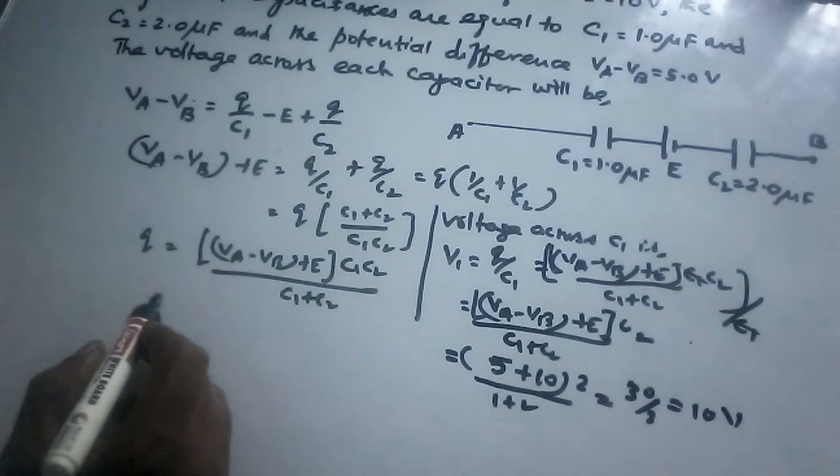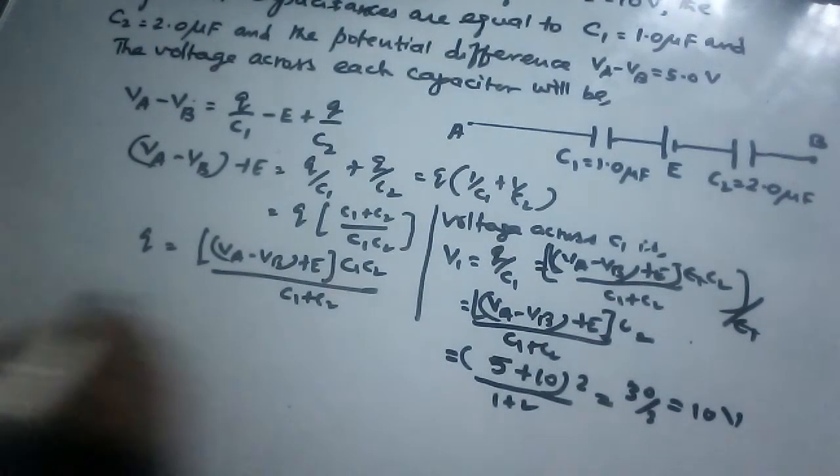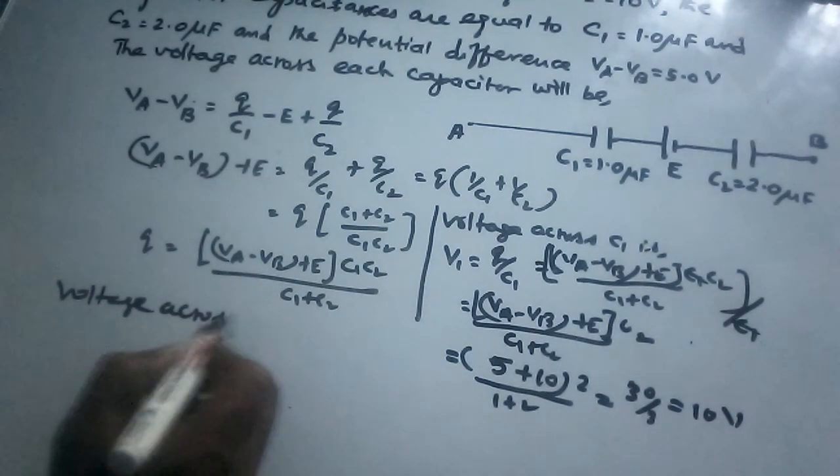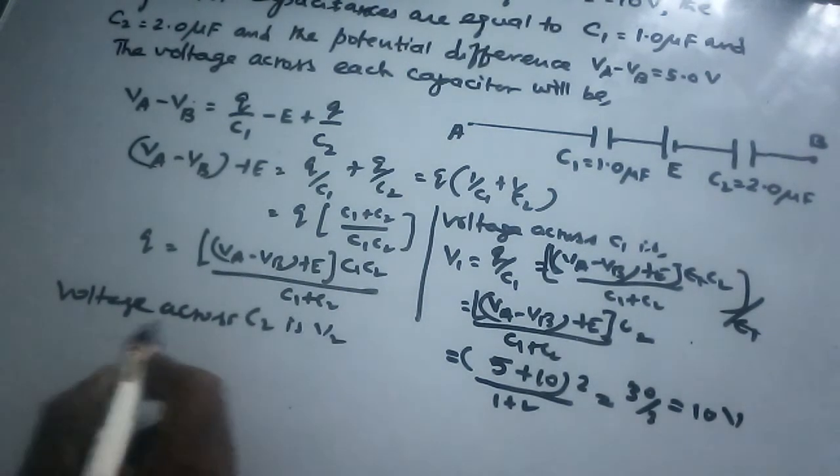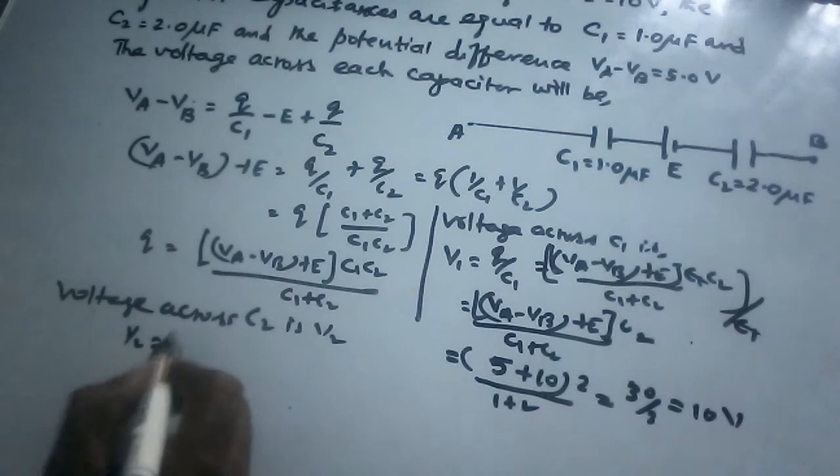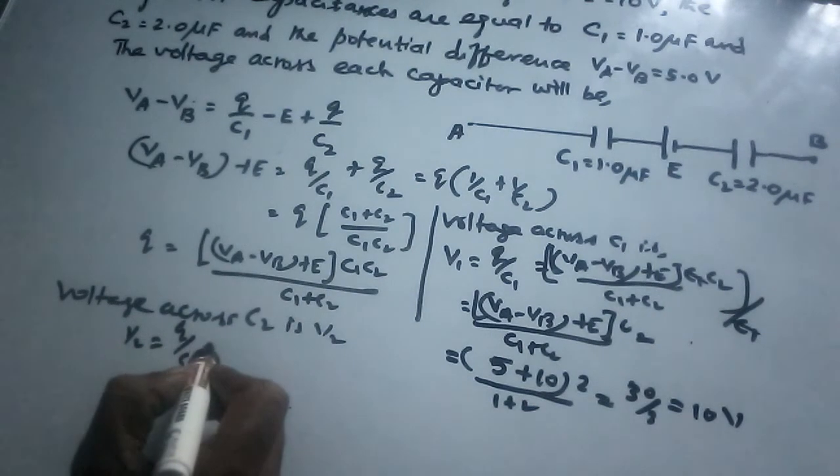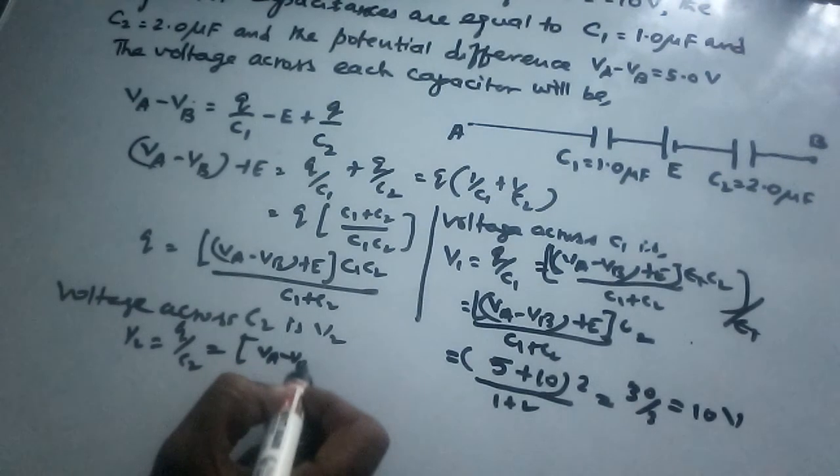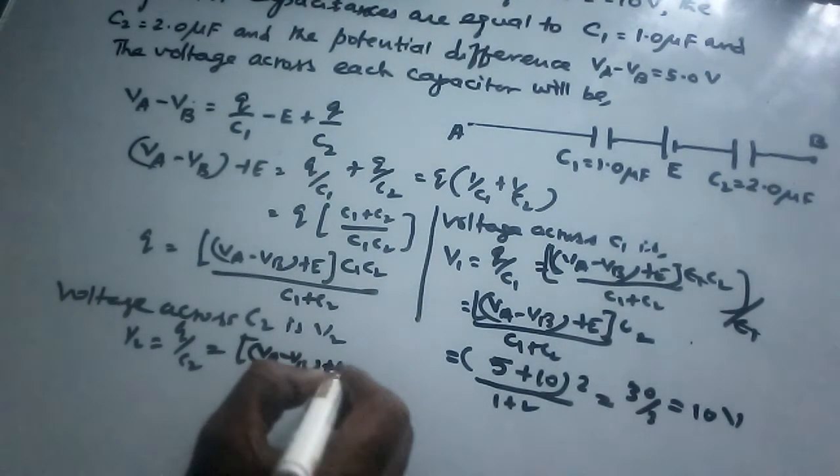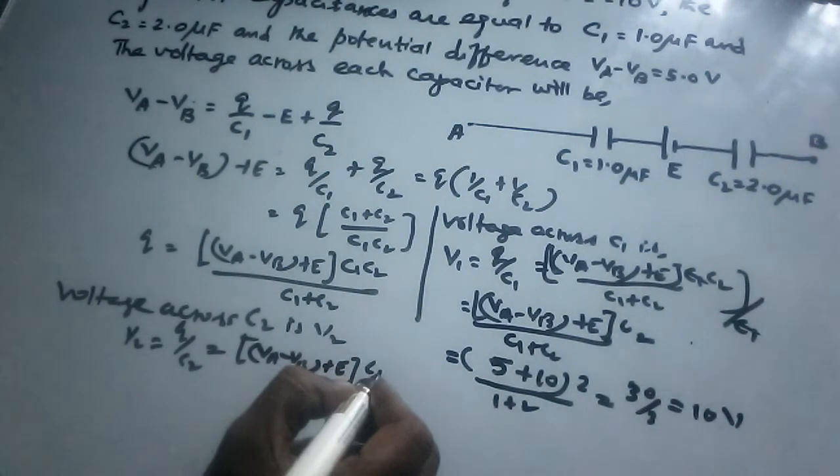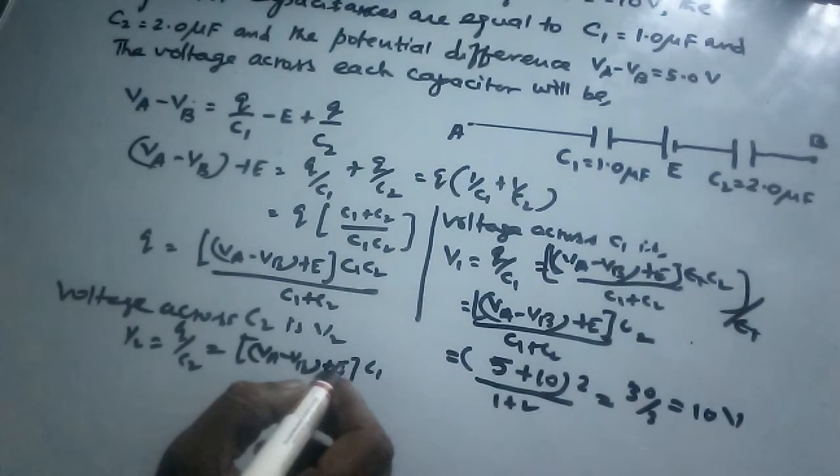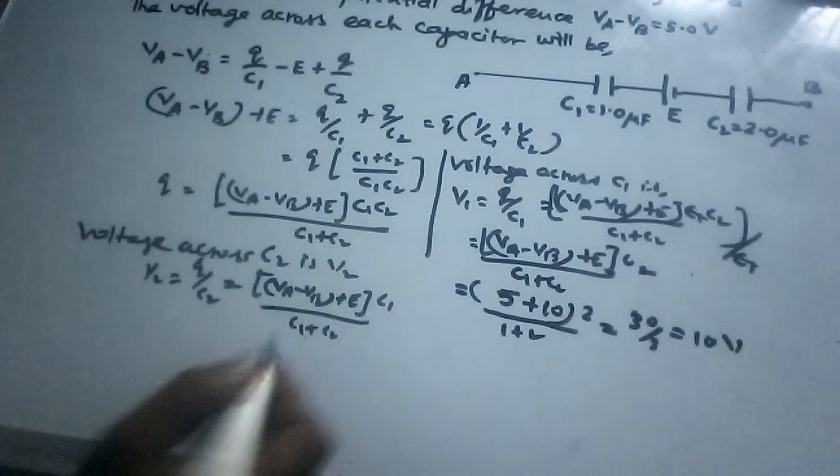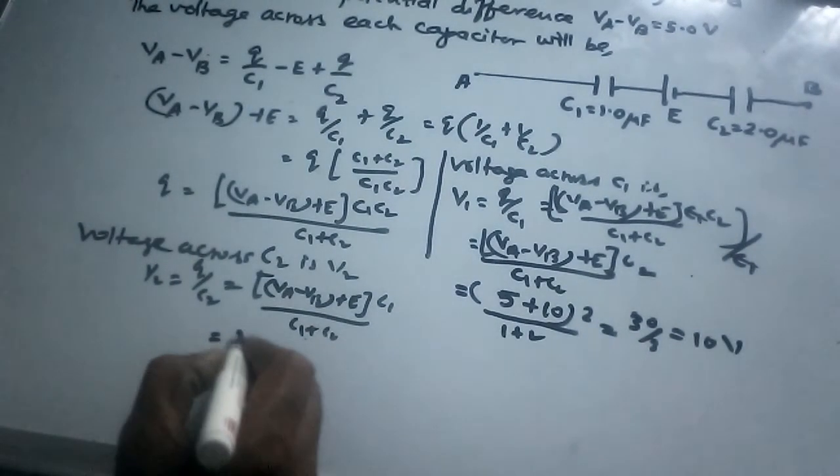The voltage across C2 is V2 equals Q/C2. Similarly, we get VA minus VB plus E, but with C1 in the numerator instead of C2. So V2 equals (VA minus VB plus E) times C1/(C1 plus C2). Substituting values: